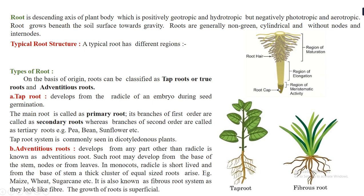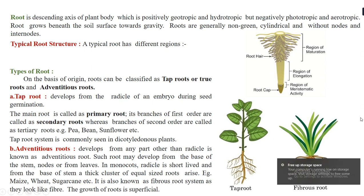A typical root has four regions. First is the root cap, which is protective in nature. Just above it is the region of meristematic tissue — cells that have the ability to divide and redivide. Above that is the elongation region, produced as the meristematic region divides. Above the elongation region is the region of maturation, where tissues differentiate for different functions including producing root hairs.